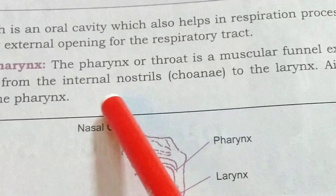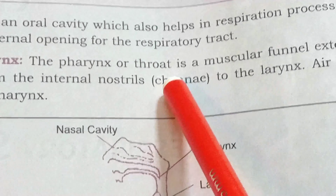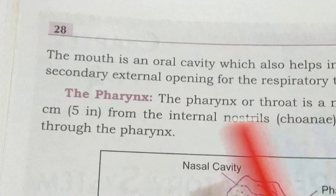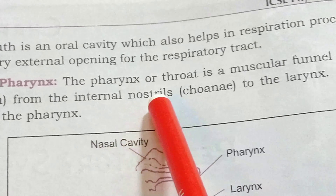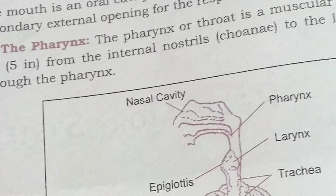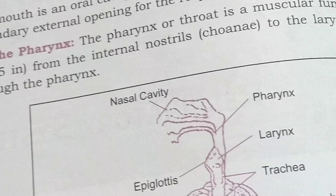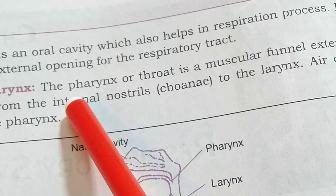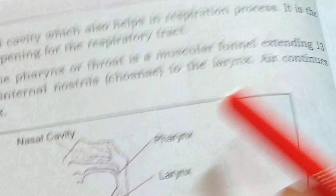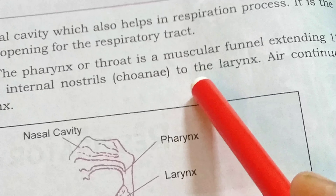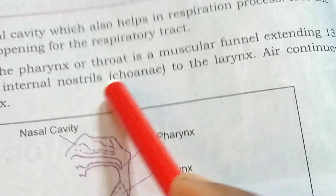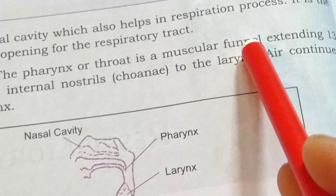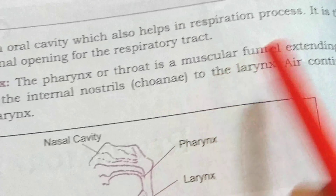The pharynx, or throat, is a muscular funnel extending 13 cm from the internal nostrils to the larynx. This tubular, funnel-like muscular structure between the nasal cavity and the larynx is known as the pharynx.